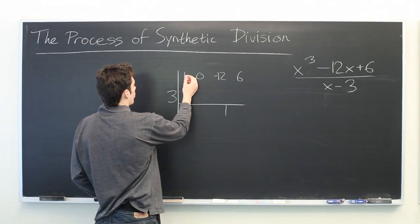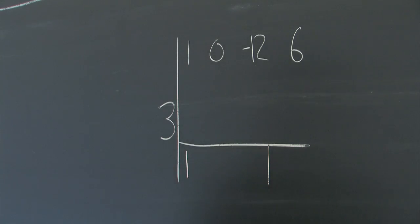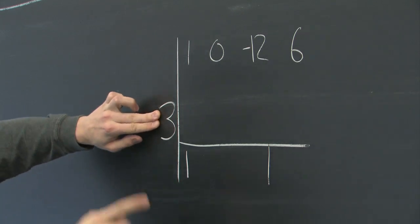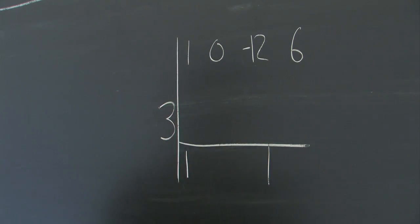Now from here we're going to bring down our first number, multiply 3 by that number and write it here. Then perform addition.